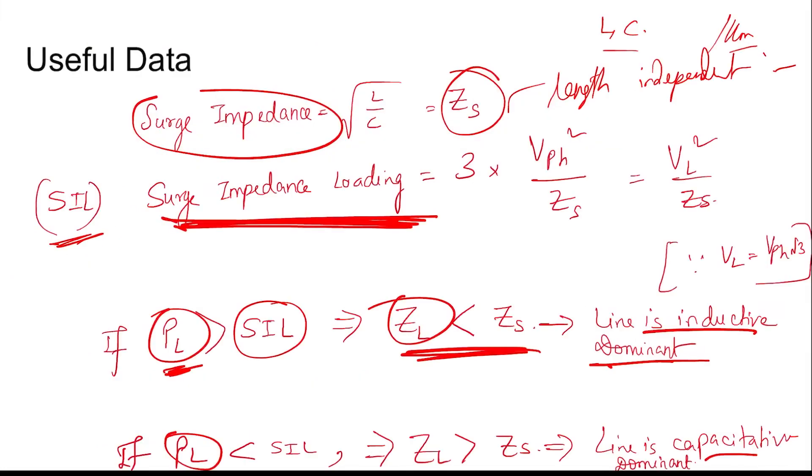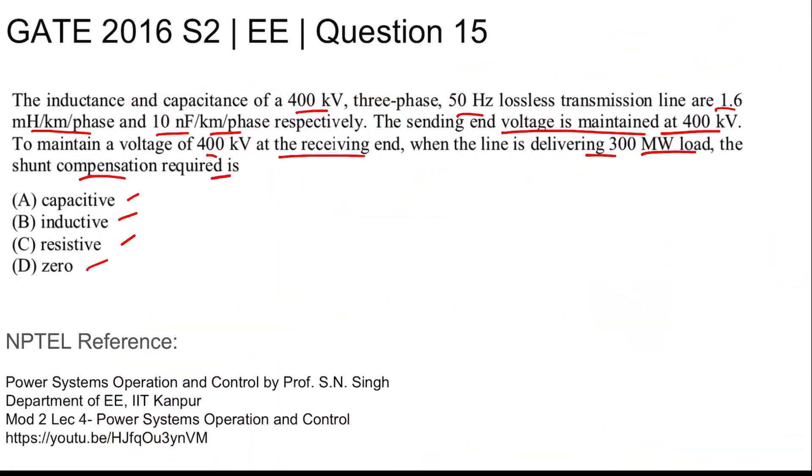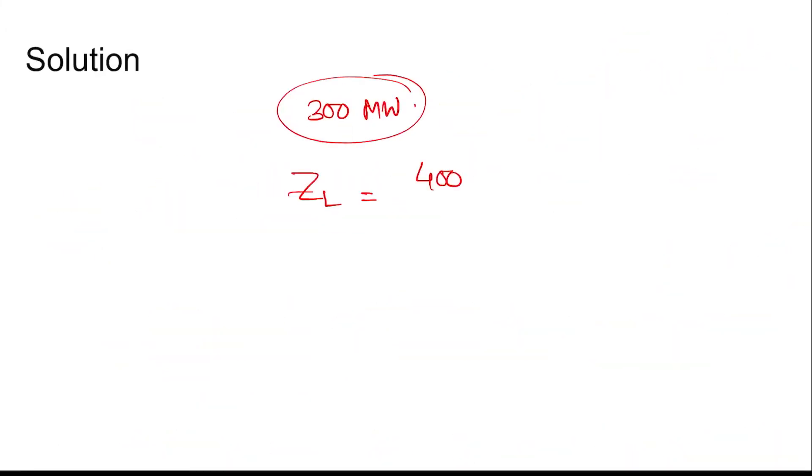So here you see that the 300 MW load is being drawn. For this, let's find ZL. ZL is 400 (because the line voltage is 400 kV) times 10 to the power 3, VL squared, divided by PL.